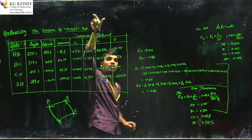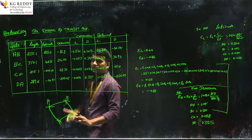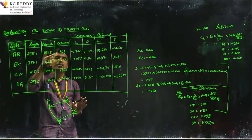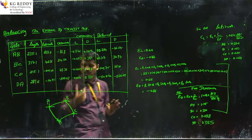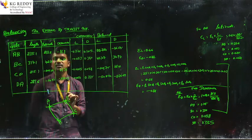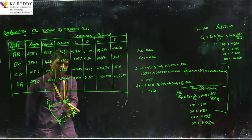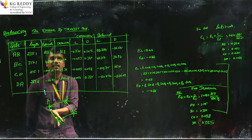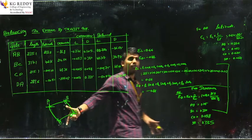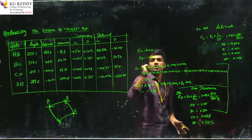In the Bowditch rule, we have to calculate all the parameters of the length level. Here, only each latitude and departure error should be considered — only the latitude and departure. It will consider lines A to B, B to C, C to D, and D to A. Now we have to write sigma L is equal to 0 and sigma D is equal to 0.